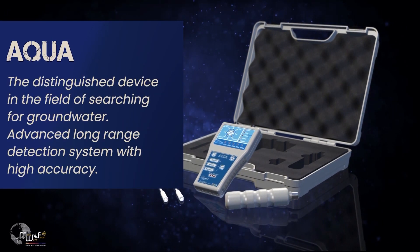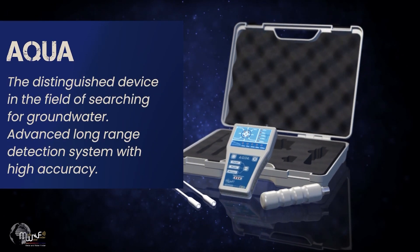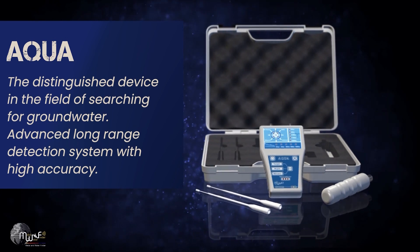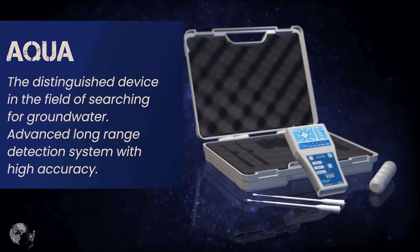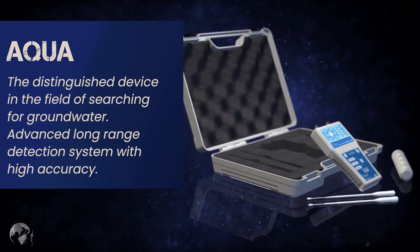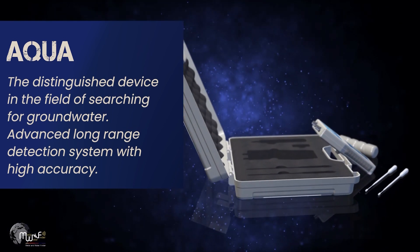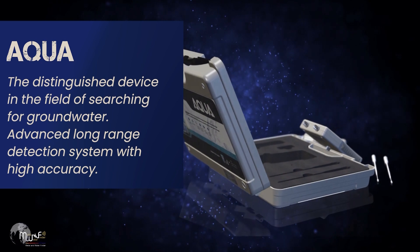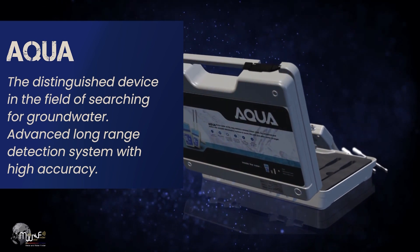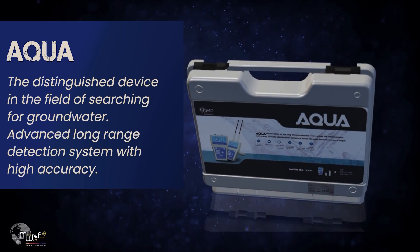AQUA Device operates on the Advanced Remote Sensing System integrated with Voice Recognition System for the path and point of presence of the target. The AQUA Device is characterized by its high accuracy of frequency waves, which enables it to identify and detect groundwater sites with extreme precision.